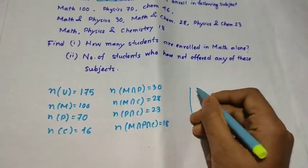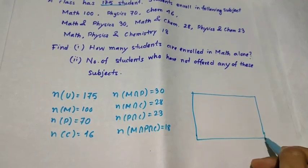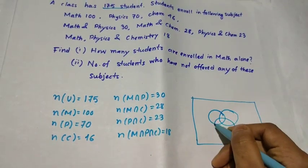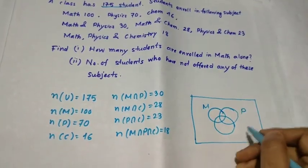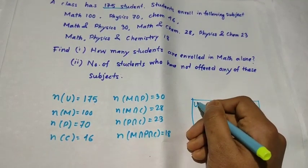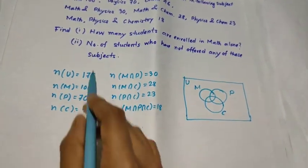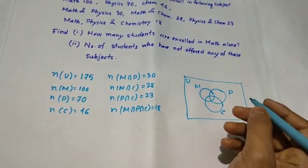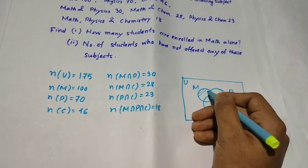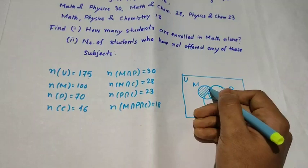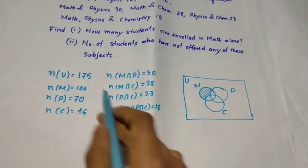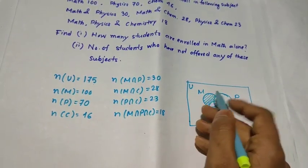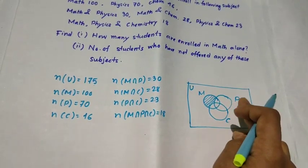Now I will draw the Venn diagram showing Math, Physics and Chemistry inside the universal set. In the first question, we have to find how many students are enrolled in Math only — that is, this region only. With the given conditions, we have to find the students who are enrolled in Math only and haven't taken any of the remaining subjects, Physics or Chemistry.